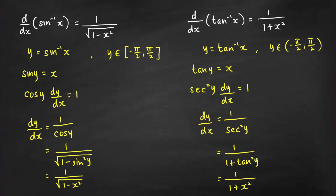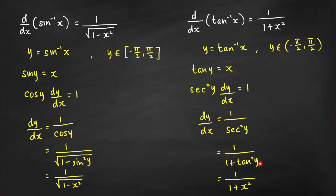For the derivative of tangent inverse x using implicit differentiation: let y equal tangent inverse x, with y between negative pi over 2 and pi over 2. Then tan y equals x. Differentiating both sides with respect to x gives sec squared y times dy/dx equals 1. Using the Pythagorean identity, sec squared y equals 1 plus tan squared y equals 1 plus x squared, giving dy/dx equals 1 over 1 plus x squared.